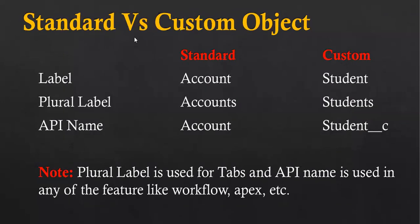Now, a comparison between standard versus custom objects based on three things: label, plural label, and API name. For a standard object, the label might be Account, plural label Accounts, and API name Account. For a custom object, the label might be Student, plural label Students, and API name Student__c. The double underscore C suffix is how you can identify that an object is custom.